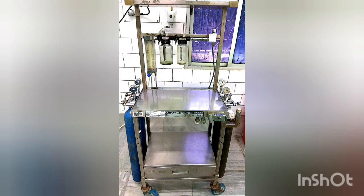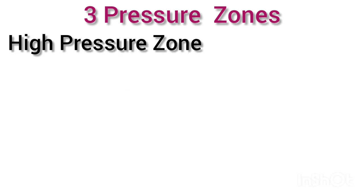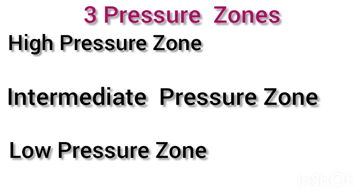In this video we will be looking into the details of different parts of the Boyle's machine. Boyle's machine is divided into three pressure zones: high pressure zone, intermediate pressure zone, and low pressure zone.